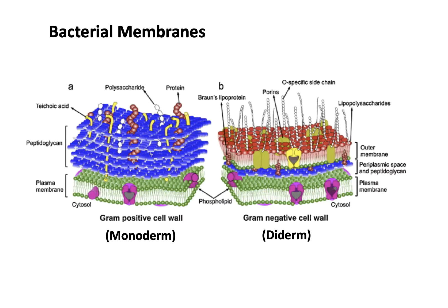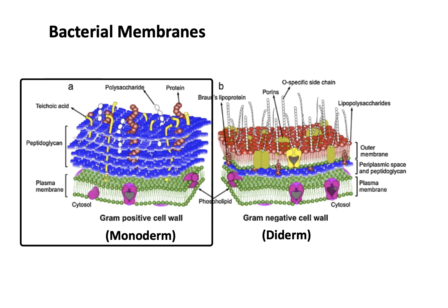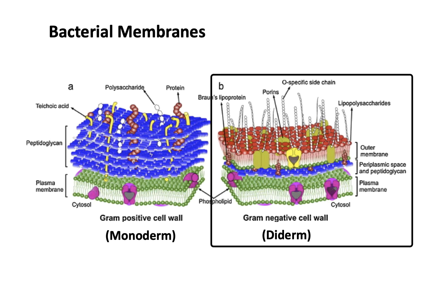For bacterial membranes, there are two major groups. Gram-positive bacteria have only one cell membrane plus a cell wall made up of peptidoglycans. The gram stain interacts with those peptidoglycans, staining those cells a purple color. The other type are gram-negative bacteria, which have two membranes: an inner plasma membrane and then an outer membrane that has a lot of lipopolysaccharides attached to it, with a thin peptidoglycan cell wall in the middle. The gram stain cannot penetrate the outer membrane, so these come out gram-negative.